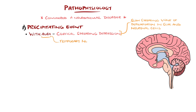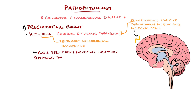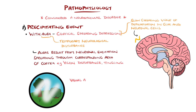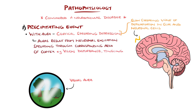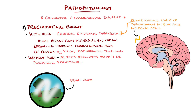The auras, defined as temporary neurological disturbances, are thought to be the result of the neuronal excitation spreading through the cortex and correlates with the character and duration of the auras experienced, for example vision changes or tingling. In those without aura, this precipitating event could be another trigger such as altered brainstem activity or peripheral trigeminal activation.